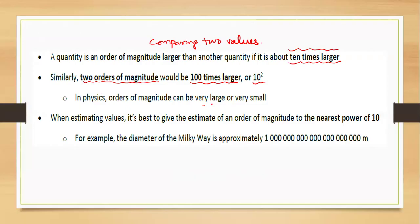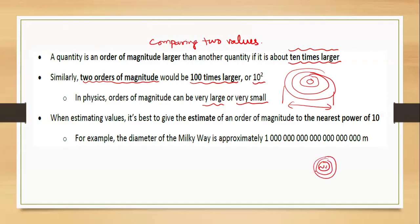In physics, orders of magnitude can be very large or very small. For example, compare the diameter of our solar system with the diameter of an atom — there is a great difference between these two values. When estimating, it is best to give an estimate to the nearest power of 10. Our Milky Way galaxy has a diameter with many zeros — counting them gives 10²¹ meters. So the order of magnitude of the Milky Way's diameter is 10²¹ meters.